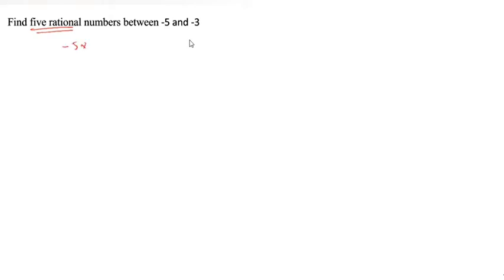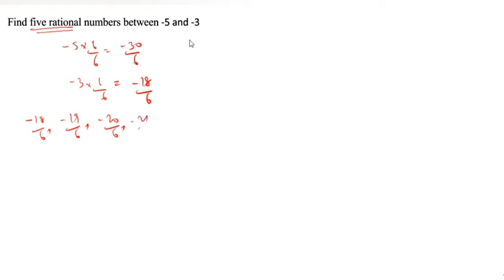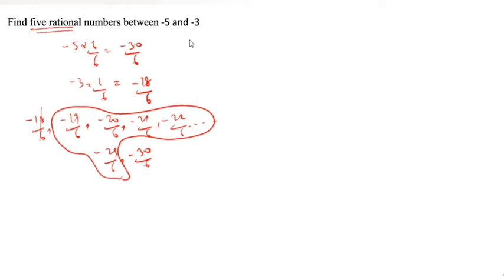Next one. Find 5 rational numbers between minus 5 and minus 3. In this we have two methods. Method 1: 5 rational numbers needed, so we go for 6. Minus 5 into 6 by 6, minus 3 into 6 by 6. So, minus 30 by 6 and minus 18 by 6. In between: minus 19 by 6, minus 20 by 6, minus 21 by 6, minus 22 by 6, up to minus 29 by 6. Don't take 18 by 6 and 30 by 6 — only in between.